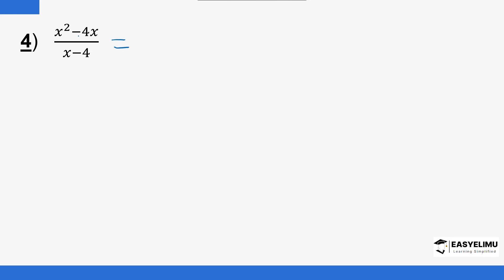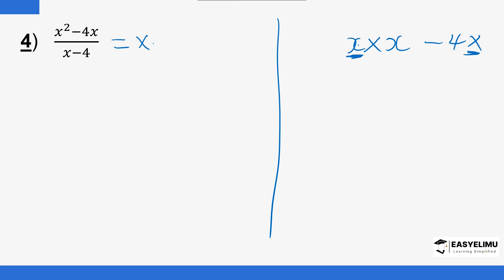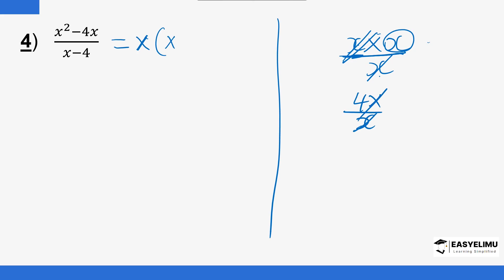We have another example. The common factor in the numerator is x: x² is x times x, and there is also −4x, so x is common to both terms. We factor out x: x² divided by x is x, and 4x divided by x is 4, giving x(x − 4) in the numerator. This is divided by (x − 4) in the denominator. The whole bracket (x − 4) cancels, and the answer is x.